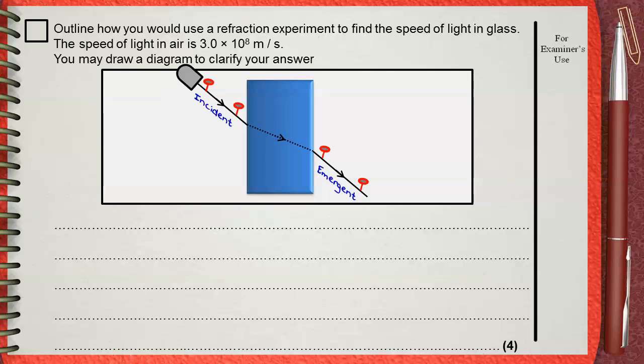We can do nothing to the first refracted ray, which is shown as a dotted arrow, because it is inside the glass, so we cannot put any pins there.